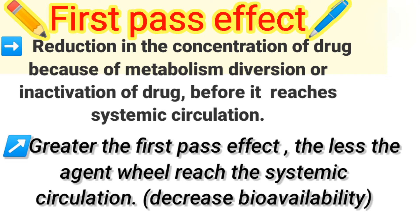The first pass effect is the reduction in the concentration of a drug due to metabolism, diversion, or inactivation before it reaches the systemic circulation — including metabolism at the intestinal wall and in the gut. It is the phenomenon in which the amount of drug is reduced before it enters systemic circulation. The first pass effect is most significant when the drug is administered by the oral route.